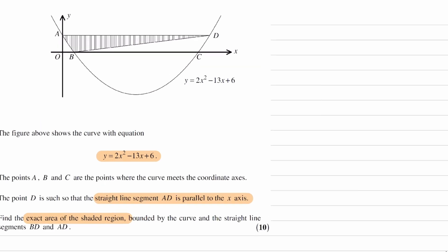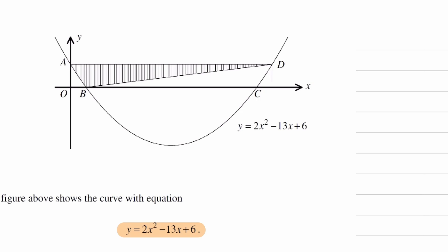So I'm going to first start by drawing a line down from point D. So that will help us split the shape up into smaller shapes, which we can then take away from one another to work out the area of the shaded region.